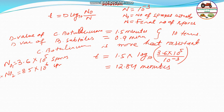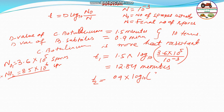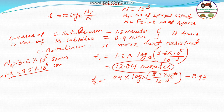Similarly, just to verify, the time for B. subtilis to reach a survival probability of 10^-3 can be calculated: T2 = 0.9 × log₁₀(8.5×10^6 / 10^-3), which gives T2 equal to 8.93 minutes. So the more heat-resistant organism takes 12.84 minutes and the other takes 8.93 minutes.